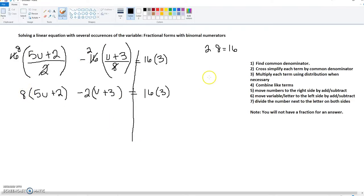We have found the common denominator and cross-simplified. Now we're going to multiply each term. We're taking 8 times 5, which gets us 40u. 8 times positive 2 gets us 16. Now we're going to distribute this negative 2. Negative 2 times u is negative 2u.